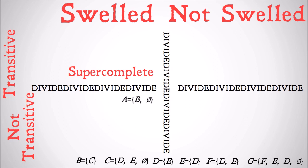We say that A is swelled but not transitive. Why? Well, A has as its members B and the null set. The subsets of B are the null set and B itself, and the set only containing C. All of those are present in A. However, the members of B — there's only one member of B, it's C — and A doesn't contain C. So A is not transitive.